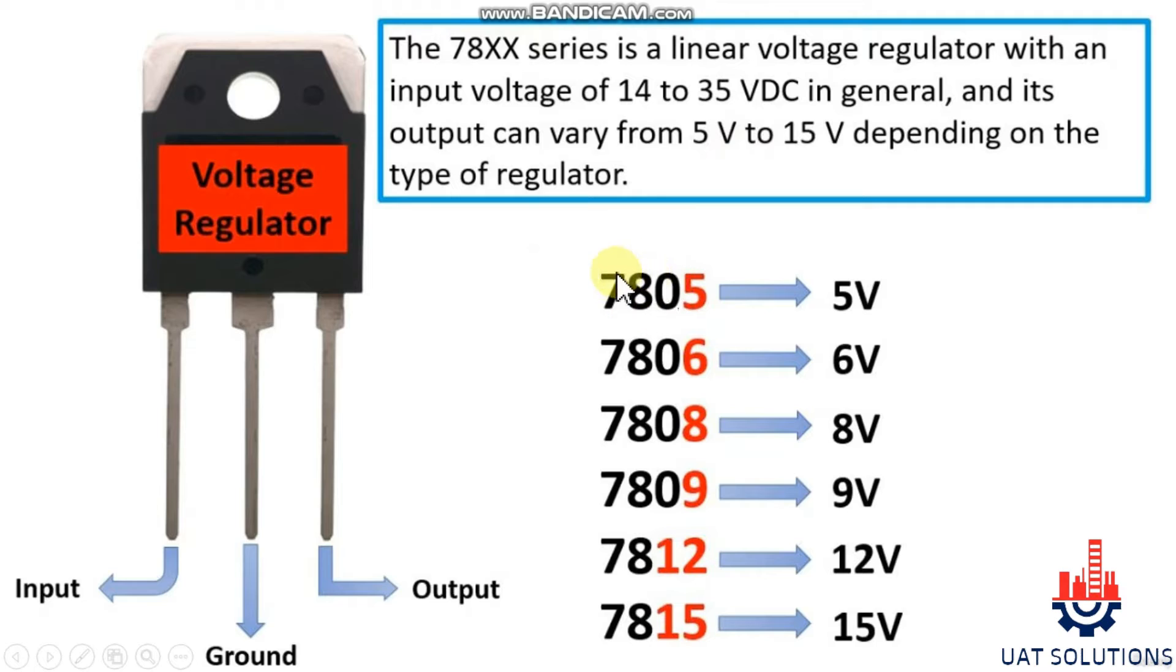The first two digits, 78, indicate the series of the voltage regulator, and the last two digits, 05, show the output voltage.